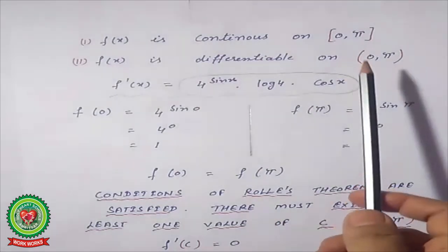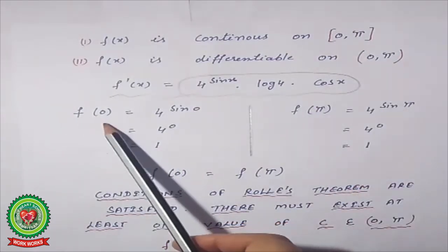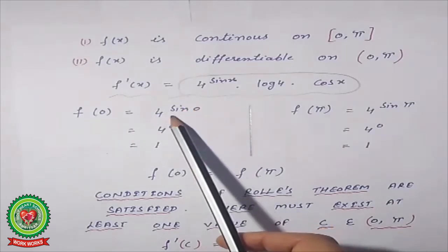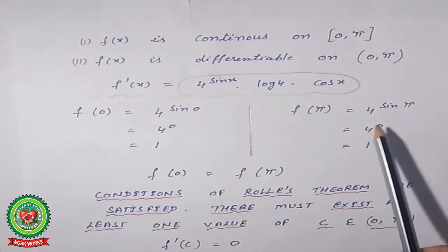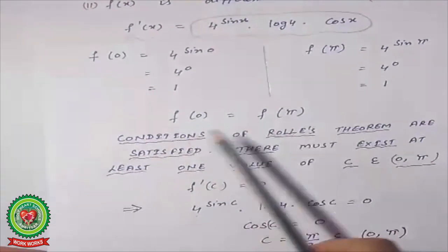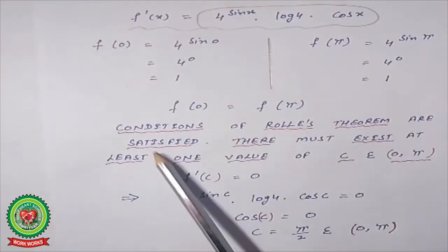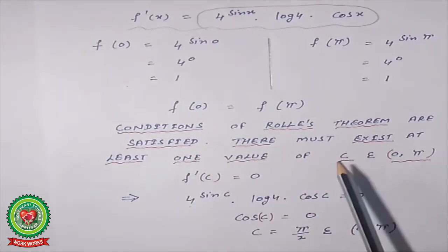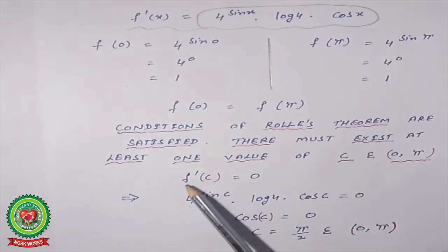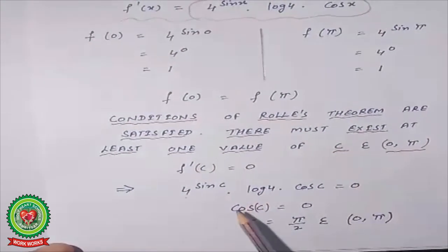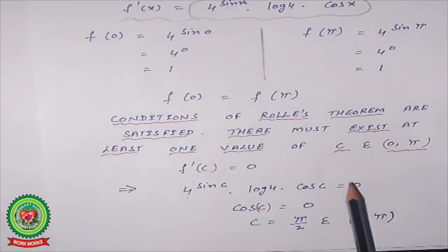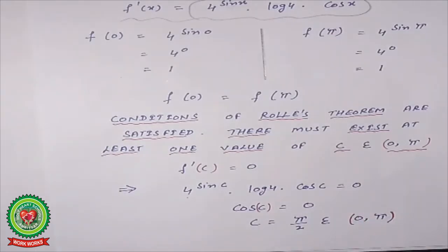Now substituting the endpoints: f(0) = 4^(sin 0) = 4^0 = 1, and f(π) = 4^(sin π) = 4^0 = 1. Both values are equal, so all conditions of Rolle's theorem are satisfied. Therefore, there exists at least one c in (0, π) such that f′(c) = 0. Setting 4^(sin c) · log(4) · cos(c) = 0 gives cos(c) = 0, so c = π/2. Since π/2 belongs to (0, π), Rolle's theorem is verified for the given function.